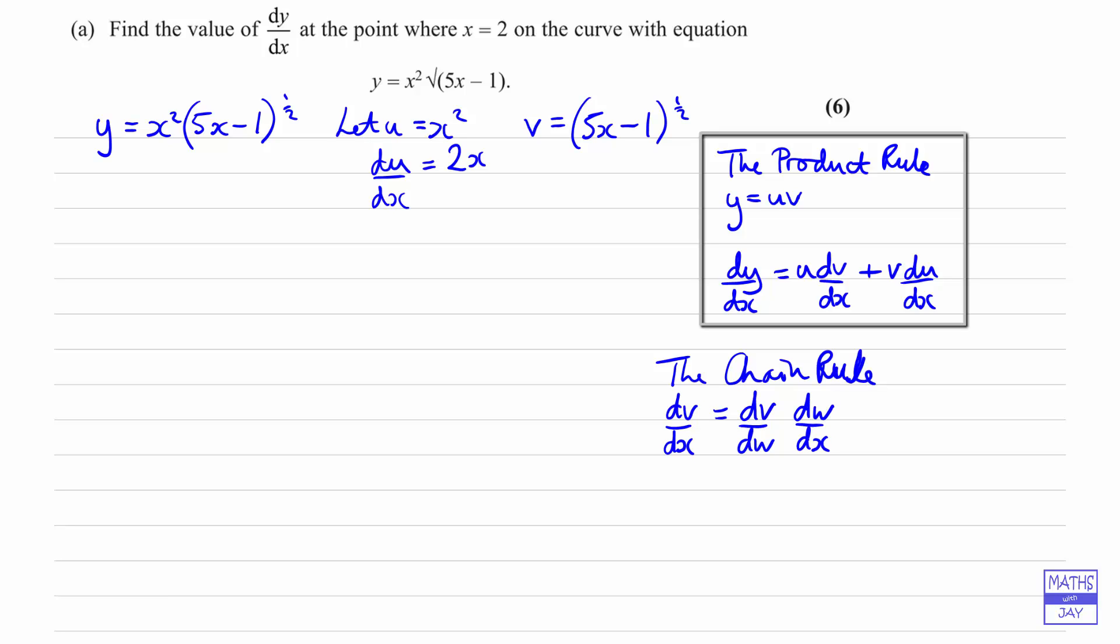So in the example we're looking at here, we're going to let w be equal to the 5x minus 1. So that we can say, if that's the case, then v is going to be w to the power of a half. And now we can work out dv by dw and dw by dx.